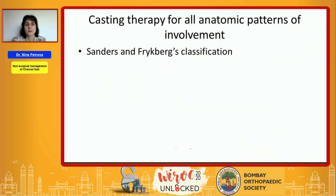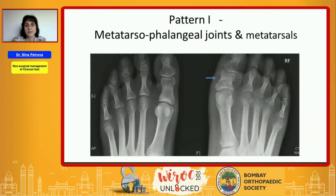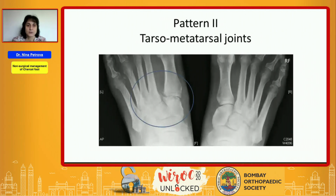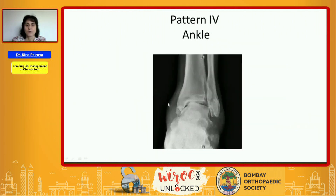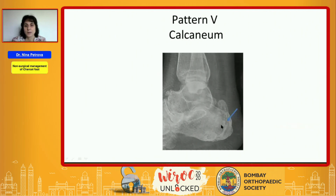Casting therapy can be applied for any anatomical pattern of involvement of the Charcot process as described in the Sanders and Frykberg classification. In the next slides I will show examples of classical pattern one involvement — metatarsophalangeal joints and metatarsals; pattern two, tarsometatarsal joints; pattern three, tarsal joints; pattern four involves the ankle; and pattern five is a calcaneal fracture.